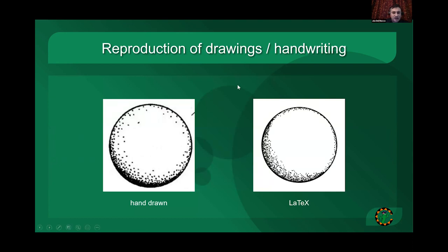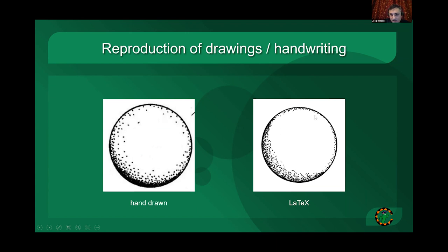I saw today some of these older hand-drawn, beautiful drawings used for art or mathematics or science in general. When the author was writing, they would also draw side drawings, and this kind of shading called stippling is done with a pen. Well, here it is generated with LaTeX and some algorithms to match that effect.